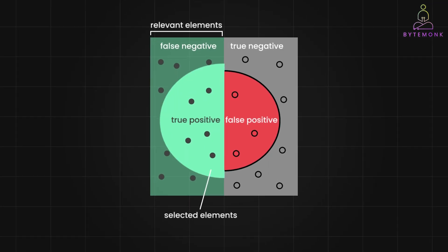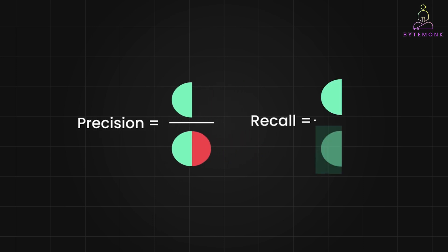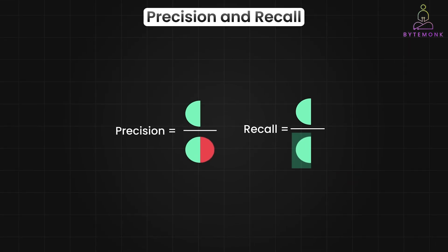The left greenish circle represents the relevant elements, things that the model should ideally identify as positive, for example spam emails or fraudulent transactions. The reddish right circle represents the selected elements, that is the items that the model actually predicts as positive. Precision is the fraction of the selected elements that are actually relevant. In other words, out of all the things that the model said were positive, how many were actually right? Recall is the fraction of relevant elements that were correctly selected. In other words, out of all the things that were actually positive, how many did the model find?